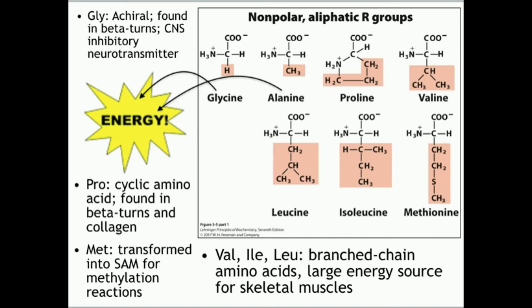Also, proline is found in beta turns, very similarly to glycine. And we find proline as a major constituent of collagen — specifically the hydroxylated version of proline.